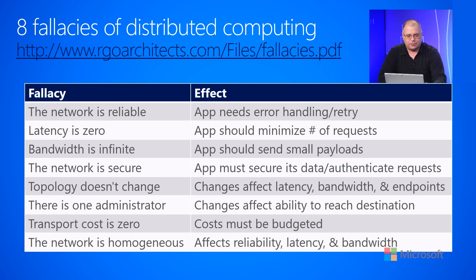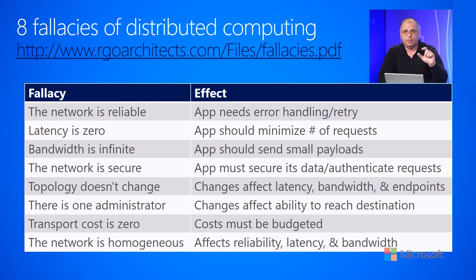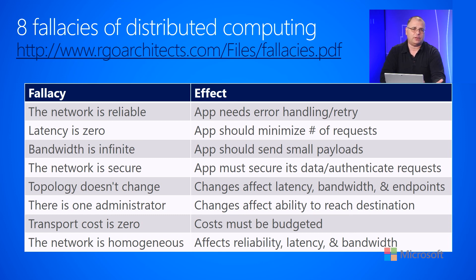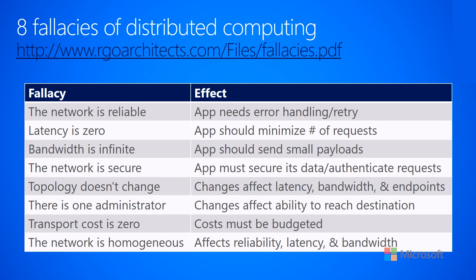The seventh fallacy is that the transport cost is zero. Sometimes you're charged for data that leaves a data center — in fact, frequently you are charged for that. It's not just the performance cost, but sometimes there's an actual monetary, currency cost associated with that. When you are designing a service that's moving a bunch of traffic, especially if that traffic leaves a particular data center, you're often charged for that. So you have to think about budgeting the cost of running the service in order to handle that.